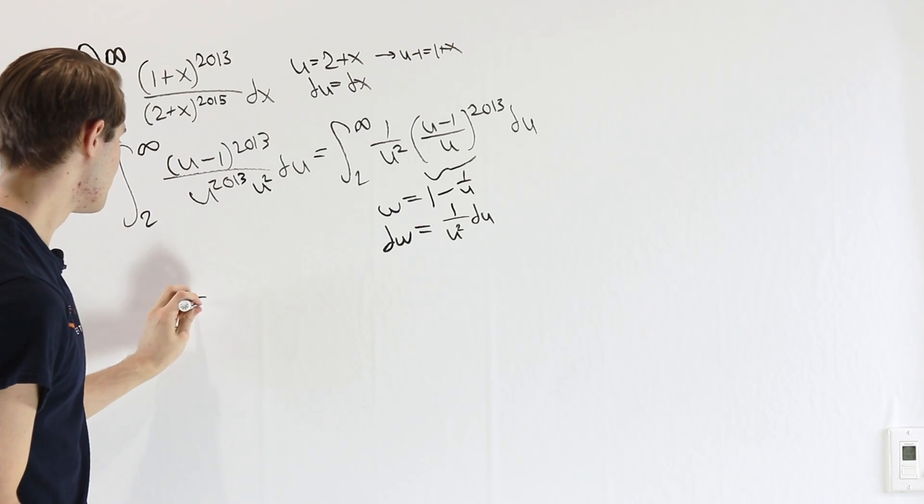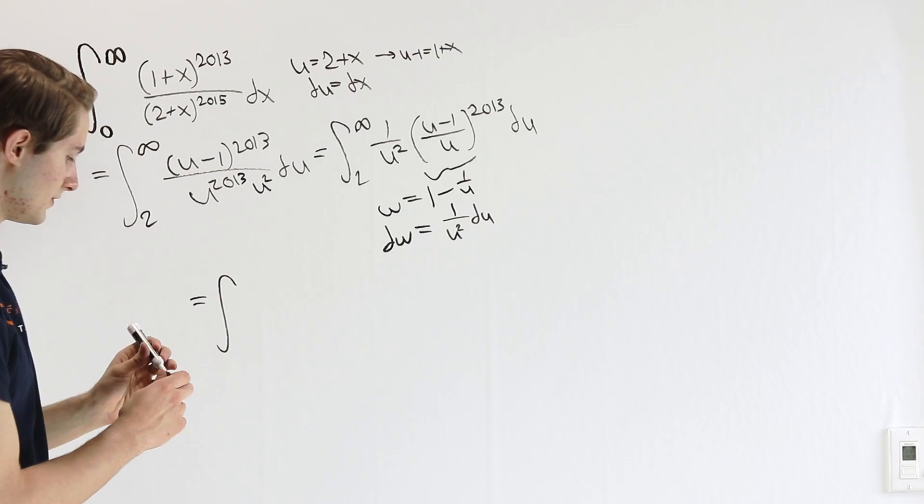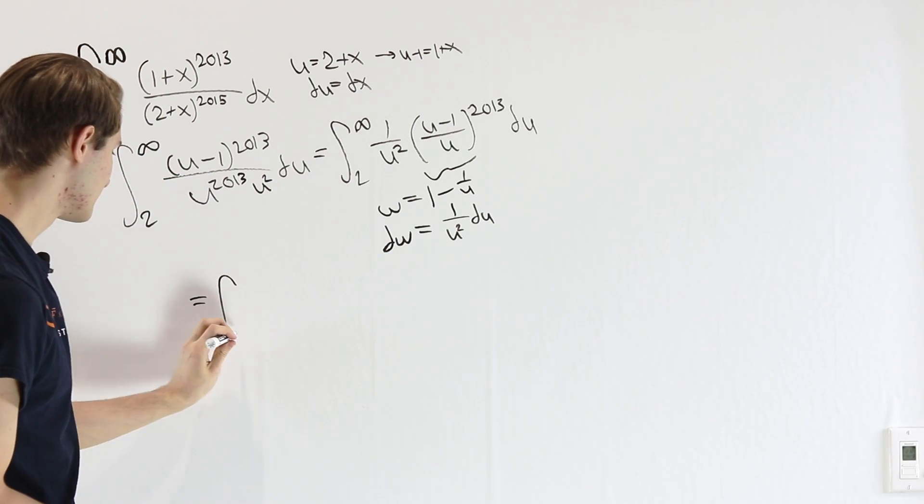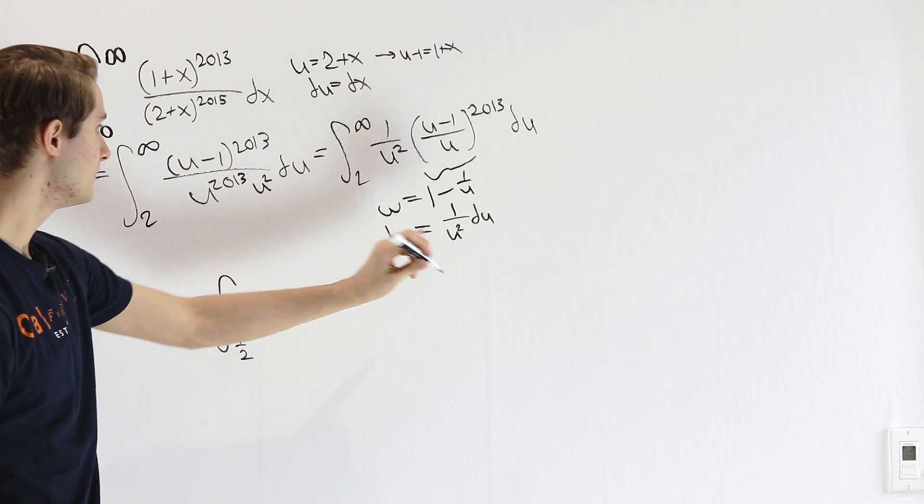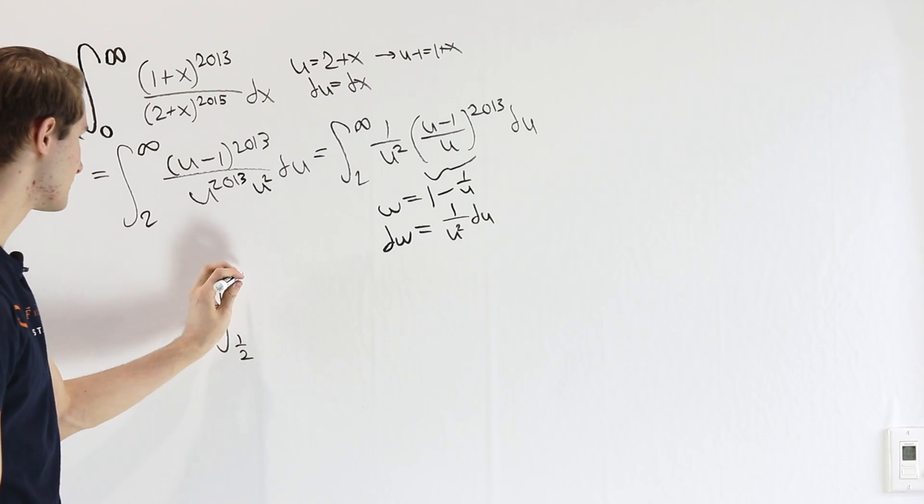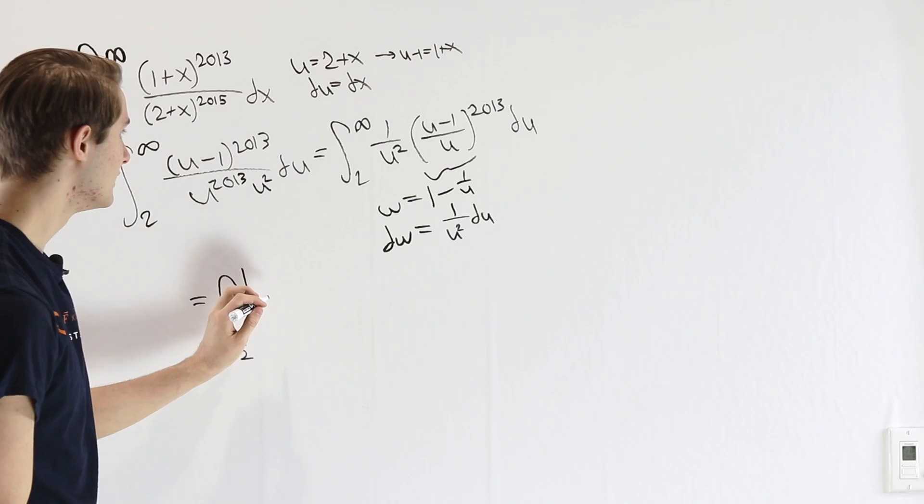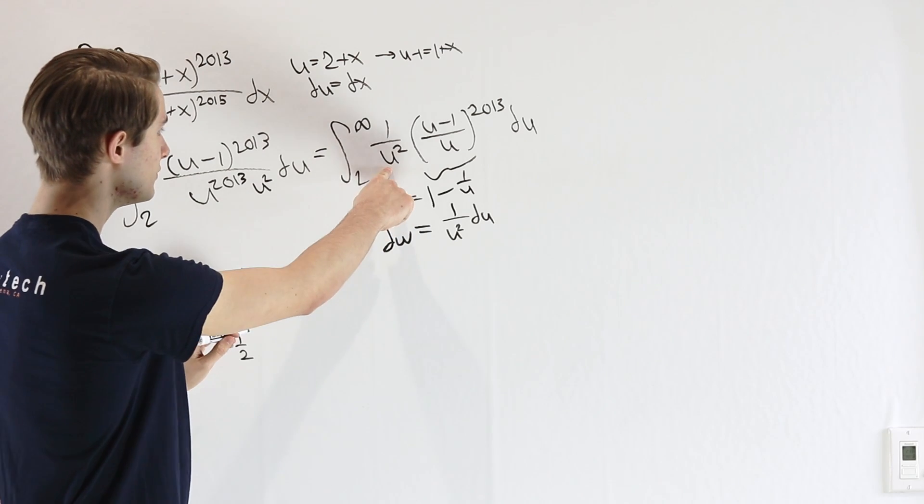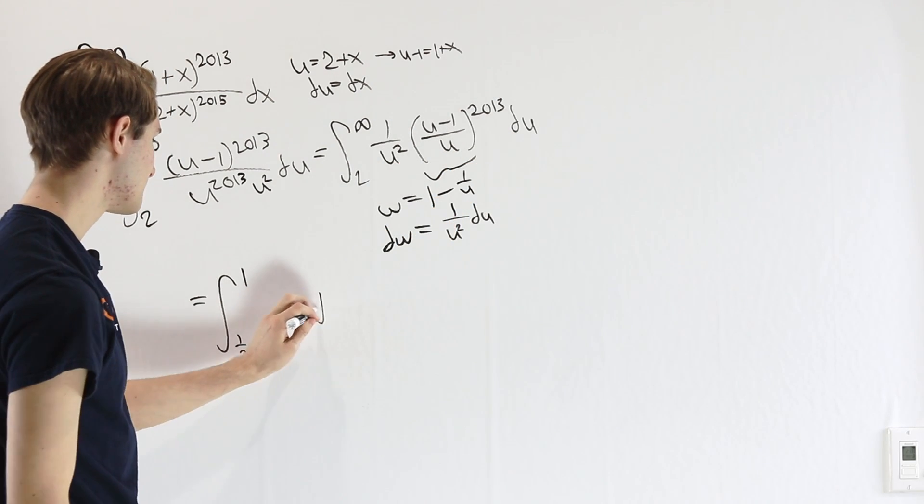So if we plug this all in, we're going to get the integral from 1 - 1/2 gives us 1/2. 1 minus 1 over infinity, 1 over infinity is 0, so we just have a 1 on top. Then we're going to get 1/u^2 du is our dw.